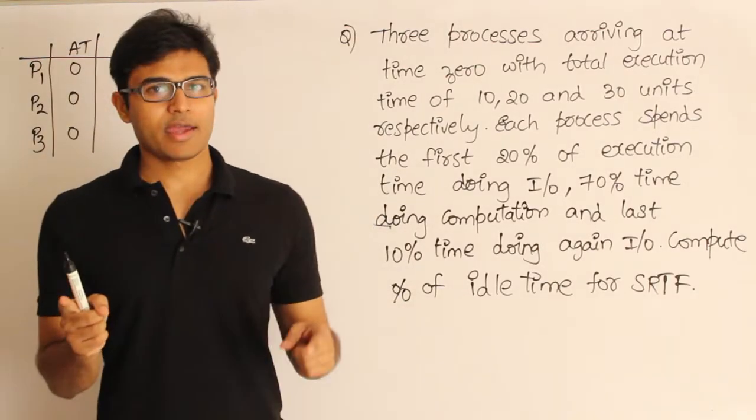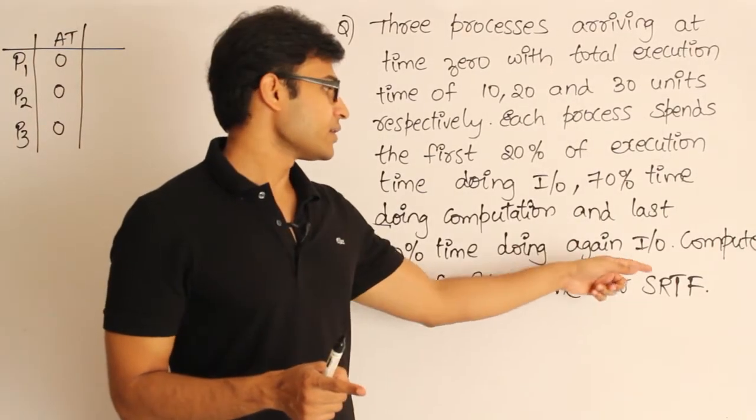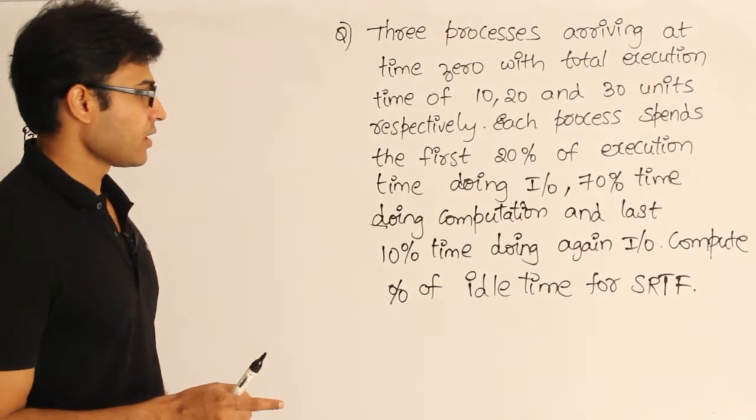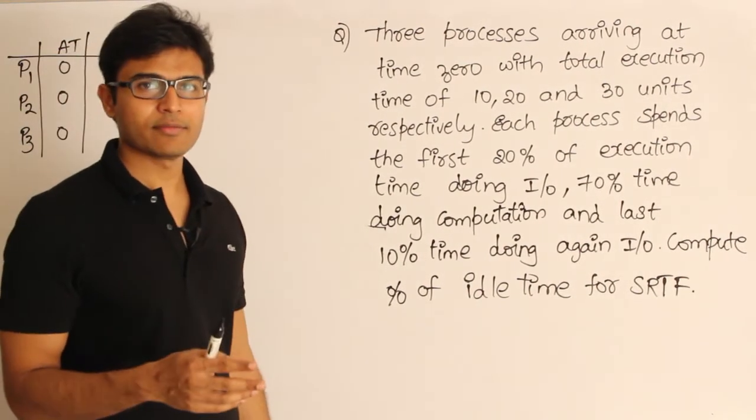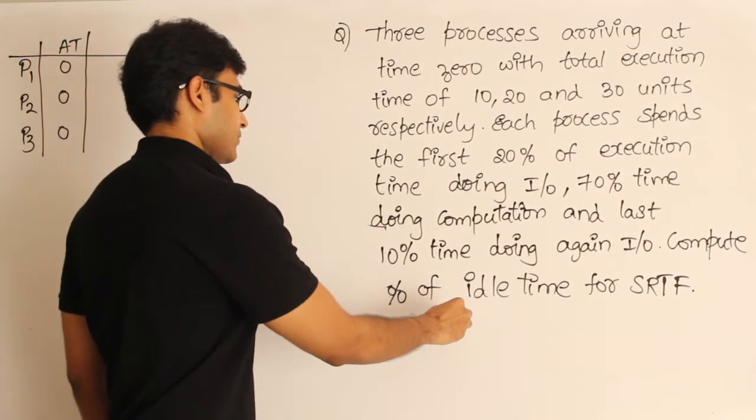Then compute the percentage of idle time for shortest remaining time first. If this is the case, they are asking us to find out the idle time, the CPU idle time. Consider the percentage of CPU idle time for shortest remaining time first.